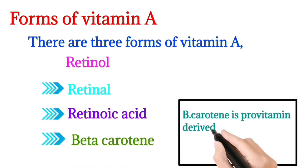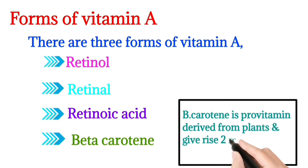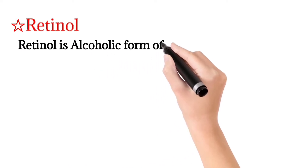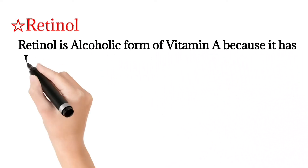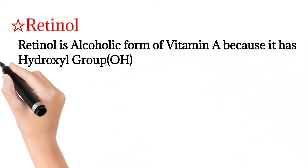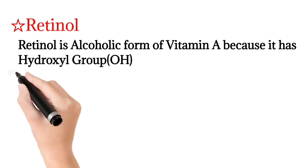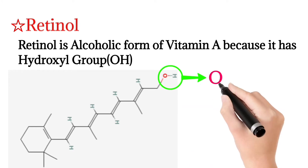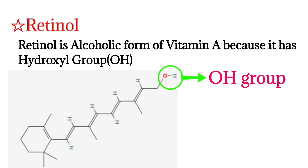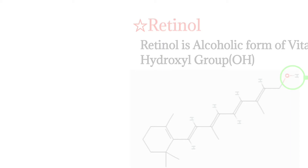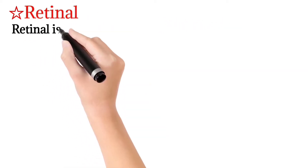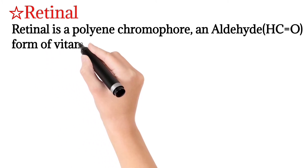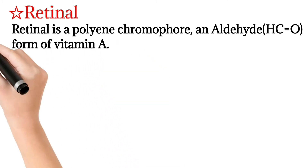Beta-carotene gives rise to molecules of retinol. Retinol is the alcoholic form of Vitamin A because it has a hydroxyl group — in the given formula of retinol, there is an attached –OH group, which is the hydroxyl group.